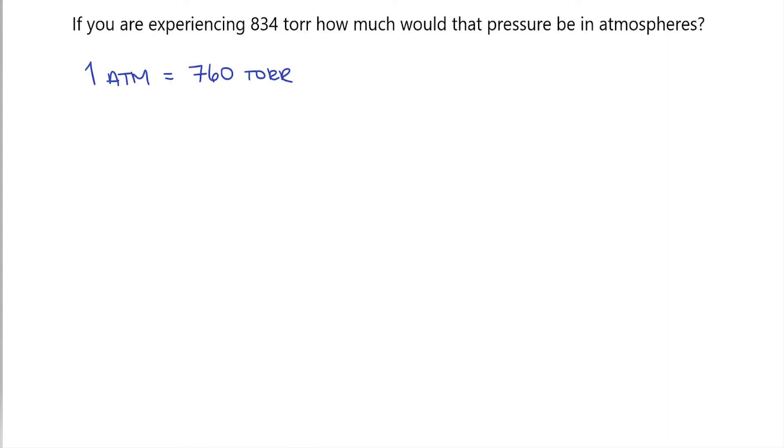Now we can represent this as two different fractions as well. We can say that for every 760 torr, we have one atmosphere. Or we could say that for every one atmosphere, we have 760 torr. Both are equivalent, but can help us in different ways.